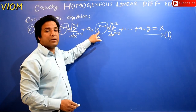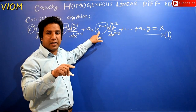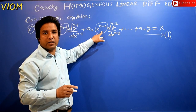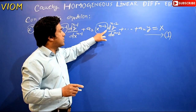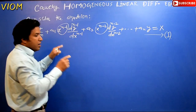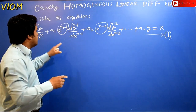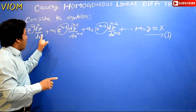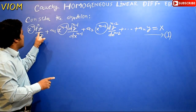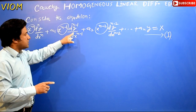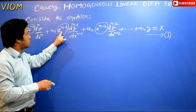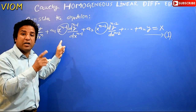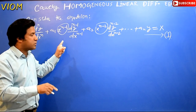In our previous lectures, the quantities in front of the differential coefficients were constant quantities — that is why those equations are known as linear differential equations with constant coefficients. We have already delivered many lectures on equations which contain differential coefficients with constant quantities in front of them.